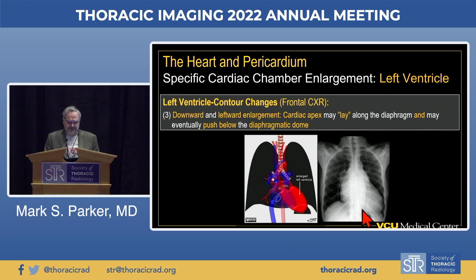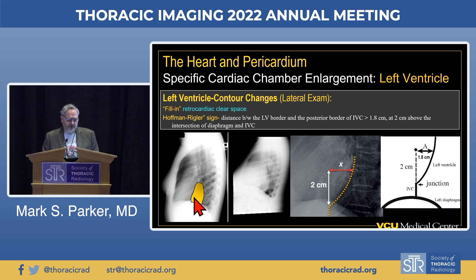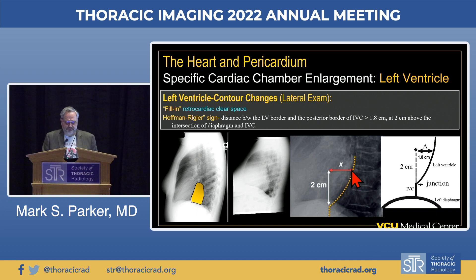On the lateral examination, as the left ventricle enlarges, it encroaches upon the retrocardiac clear space between the posterior wall and the anterior margin of the spine. We may see the Hoffman-Riggler sign, where the distance between the posterior wall of the left ventricular chamber extends more than 1.8 centimeters beyond the line drawn at the intersection of the diaphragm and the anterior vena cava—a classic sign of LVH on the lateral radiograph.